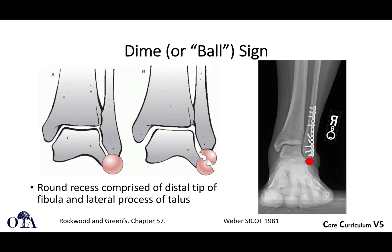The dime sign: if the fibula is out to length, you will often see this arc — kind of like a Shenton's line on a mortise view. On a plain radiograph you could pull a dime out of your pocket, put it on the film, and it kind of fits in that circle — that's where the dime sign comes from. We're using digital images now in many parts of the world, and many regions don't have dimes, so this is a very regional comment. Nevertheless, that Shenton's line concept might help you identify your fibular length.